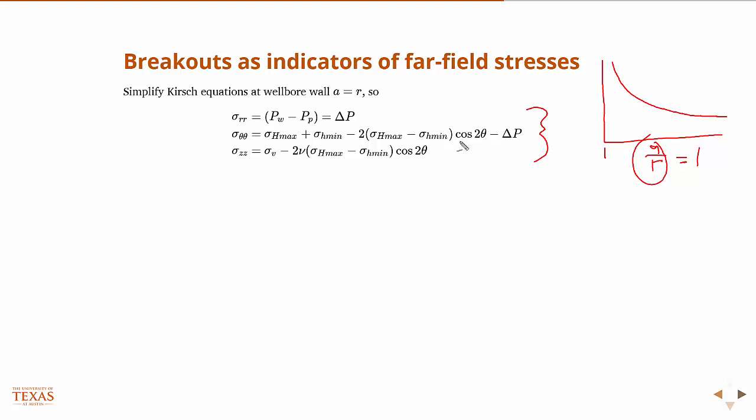Well then, now we have this cosine two theta. Theta is the distance around the wellbore. So theta is going to be minimal. So what we want here is really the max and min values of the hoop stress. So theta will be minimal at zero and 180 degrees. Because cosine two theta is minimal at zero and 180, the minimum hoop stress equation simplifies to this.